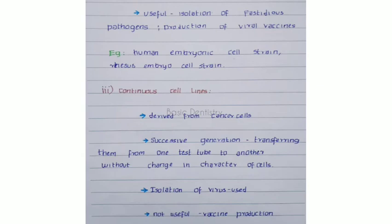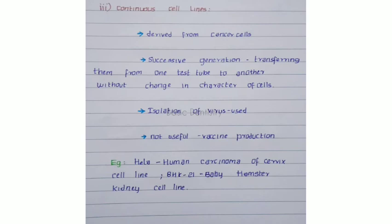The third type is continuous cell lines. The cells are derived from cancer cells, that is, oncogenic cells, giving rise to successive generations. Serial culture is done by transferring from one test tube to another without any change in the character of the cells, so they can be used continuously for a long period. They are used for isolation of viruses but are not useful for vaccine production.